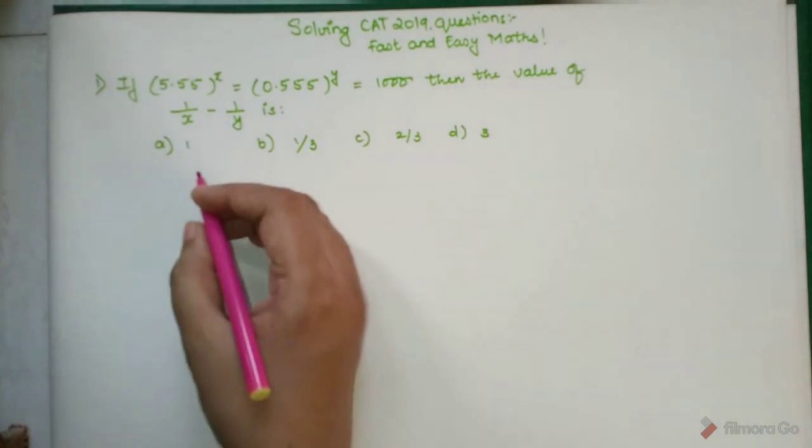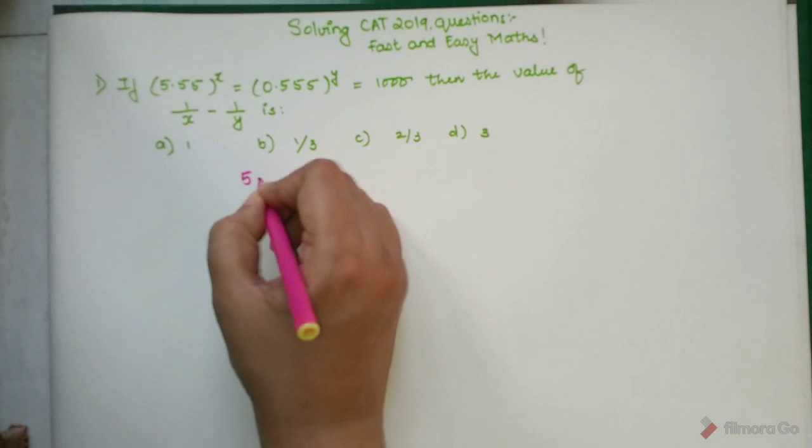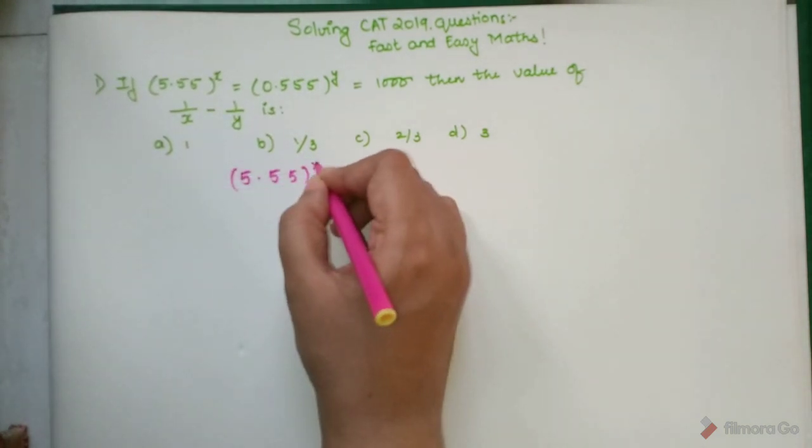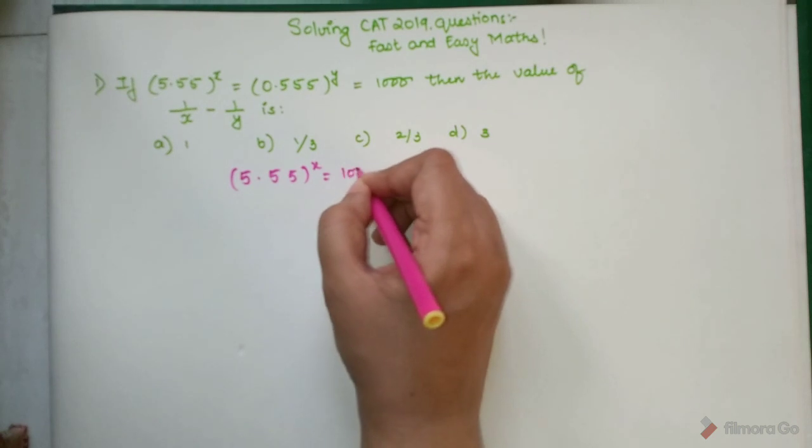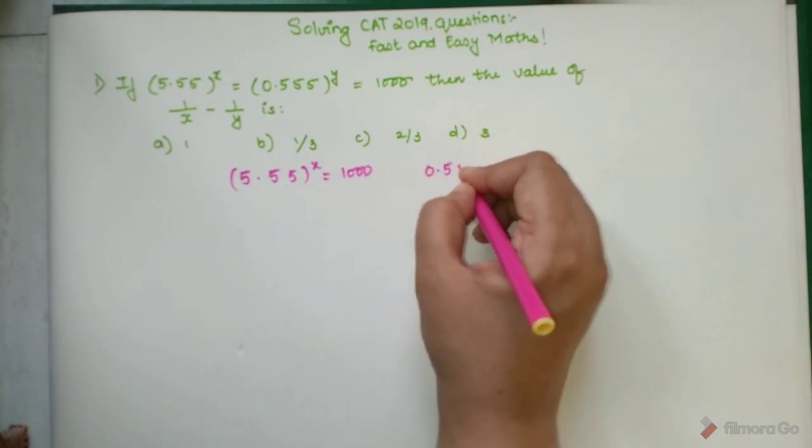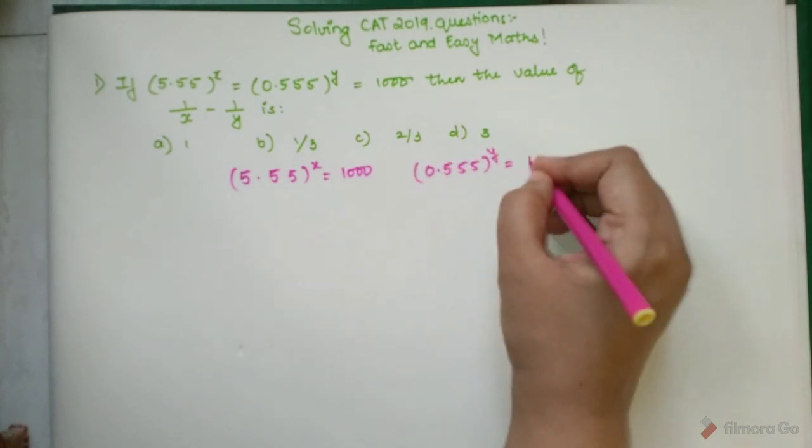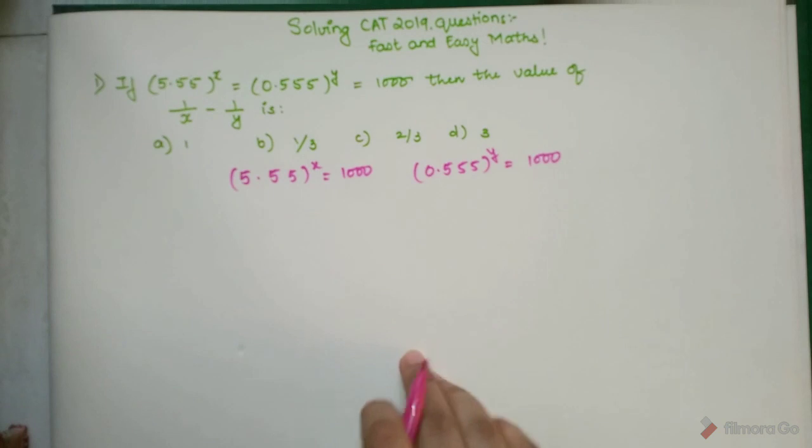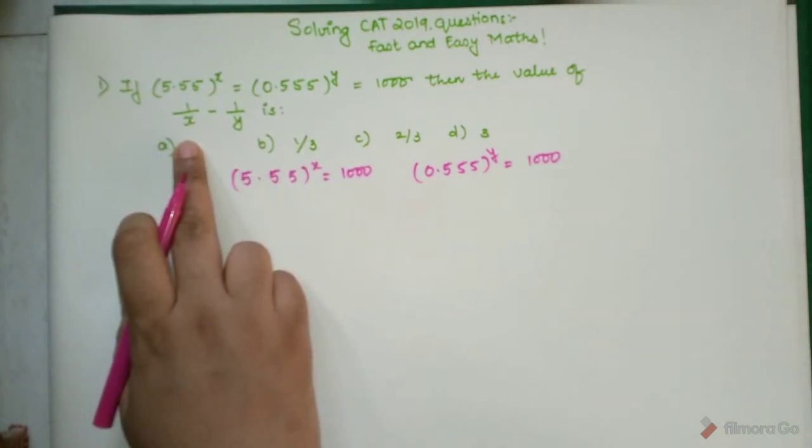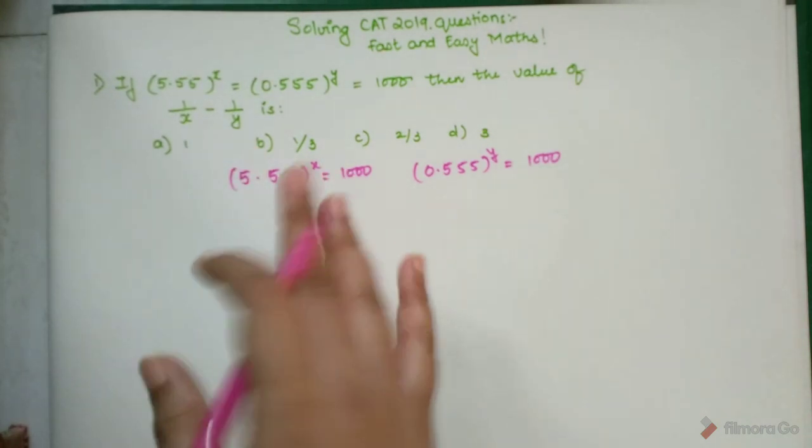Let's first write all of this individually. We can say that (5.55)^x = 1000. I can also say that (0.555)^y = 1000. Now if you look closely, what are they asking? They're asking for the value of 1/x and 1/y. So how can I get 1/x and 1/y looking at the two things which are given to us?